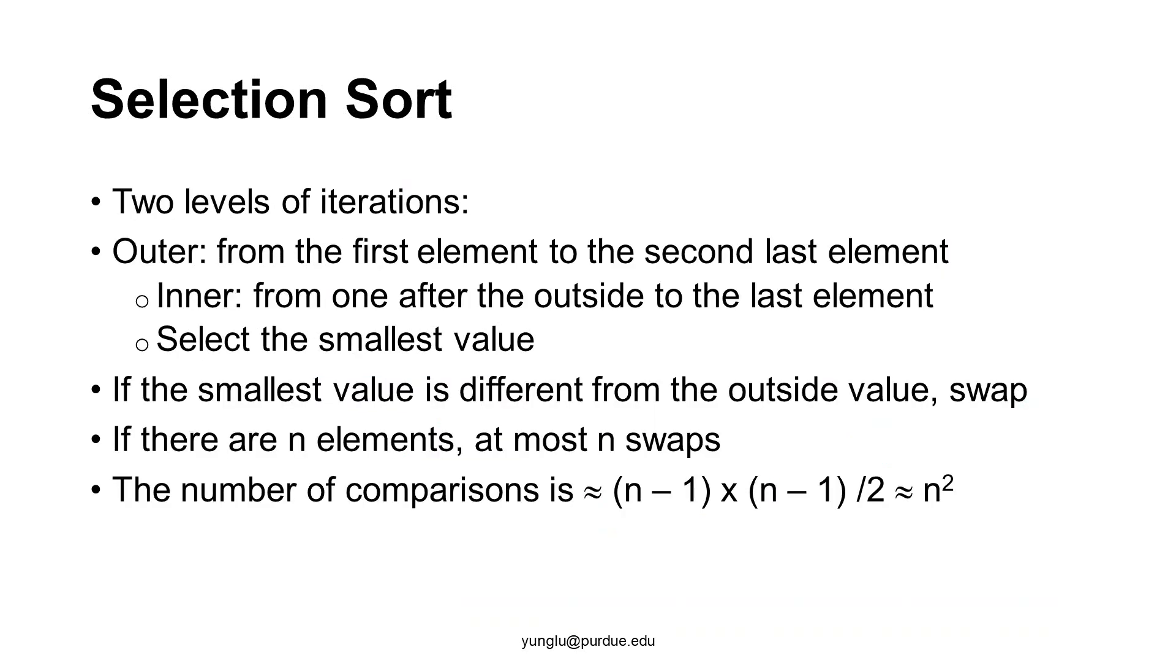Selection sort has two levels of iterations. The outer level go through the first element of the array to the second last element. This iteration marks the order of the value we want to select. If this is the first element, we want to select the smallest value in the entire array.